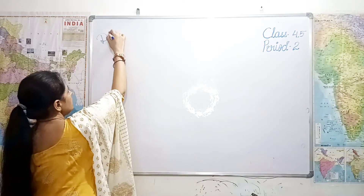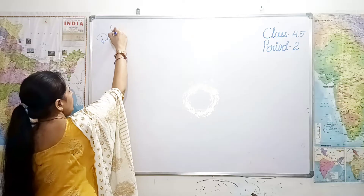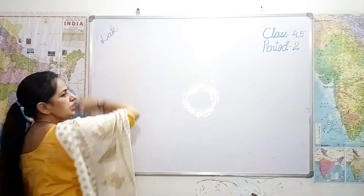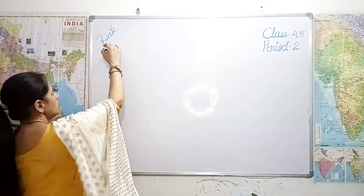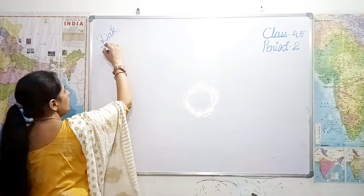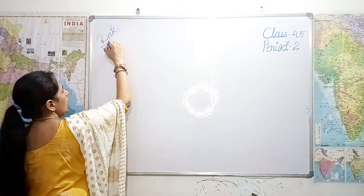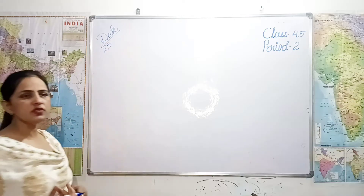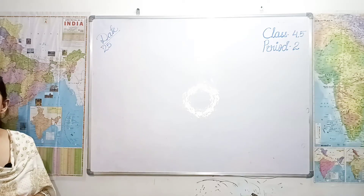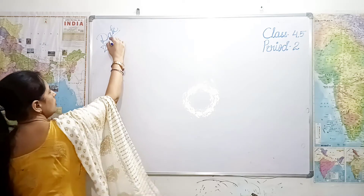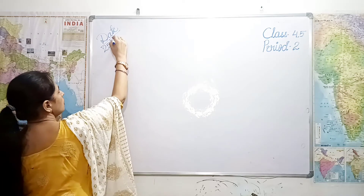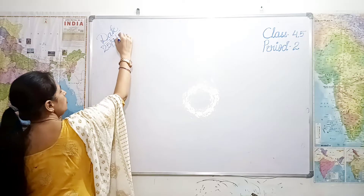Let me know what is the date today. Aaj kya tarikh hai bachho? It is 25. And which month is going on? It is September. Very good.